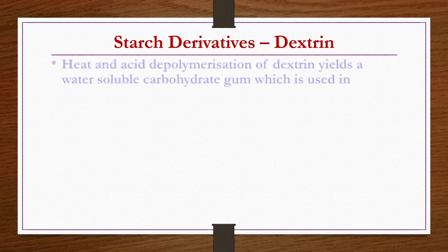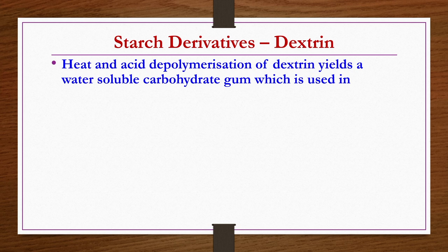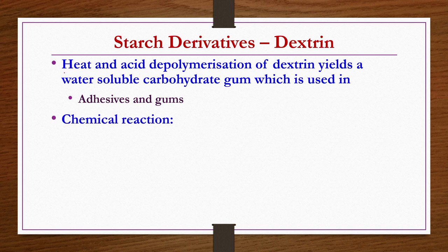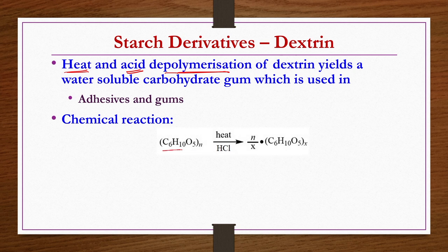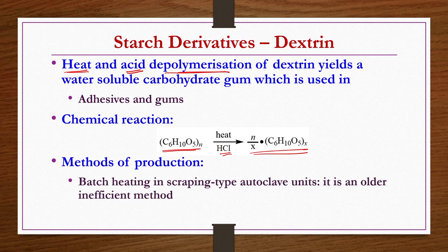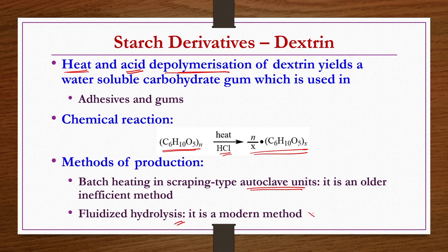Starch derivative — dextrin: heat and acid depolymerization of starch yields a water-soluble carbohydrate gum used in adhesives and gums. Depolymerization of starch takes place by acid treatment under hot conditions. Whatever the starch is, if you heat it in the presence of an acid, depolymerization takes place and you get dextrin. Batch autoclaves were used earlier but are not efficient; nowadays fluidized hydrolysis is used, which is the modern method with several advantages over the batch process.